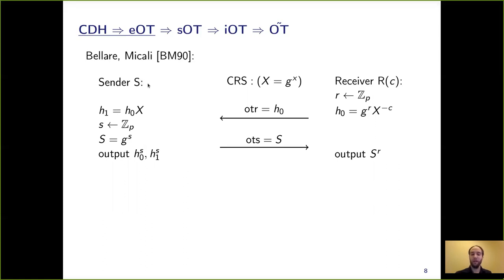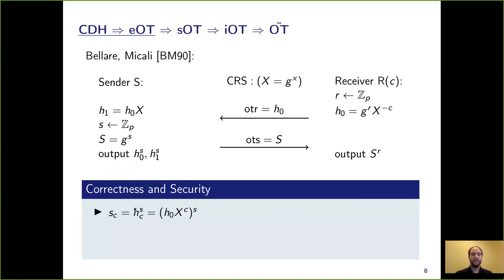Here we emphasize that the sender doesn't really have input strings, so we consider these output strings to be the sender's OT strings. Now we need to show correctness: the receiver computes SC. SC is defined as HC to the S. Plugging in HC = H0 times capital X to the C, all to the S, then plugging in H0 = G to the R times capital X to the minus C, the X to the C and X to the minus C cancel out. We obtain G to the R to the S, which equals capital S to the R. So the receiver outputs capital S to the R, exactly the OT string corresponding to choice bit C.